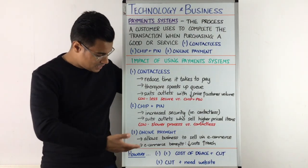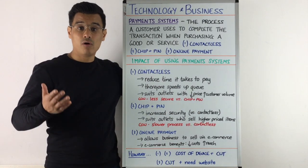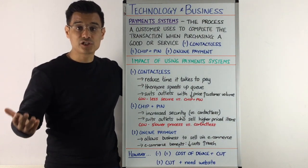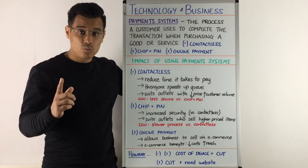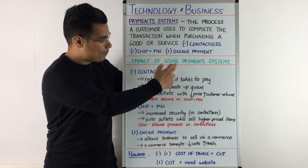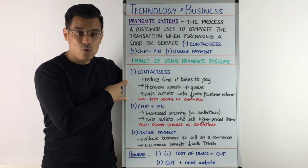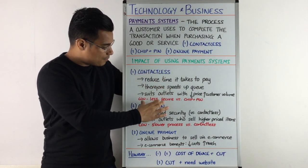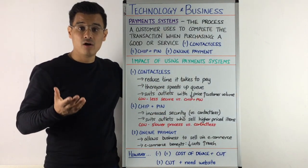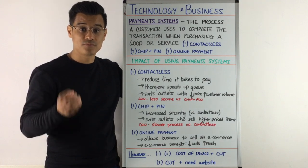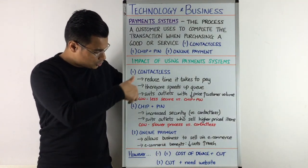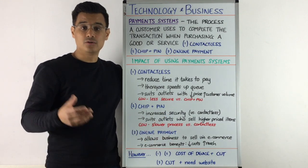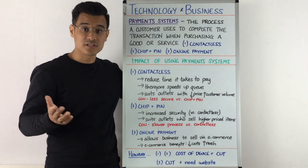Online payment is number three. Online payments allow you as a business to sell on the internet through e-commerce, and you get the benefits of e-commerce such as higher reach and possibly lower costs. One thing to consider: contactless and chip and pin are used in a physical outlet offline, and the machine needed for both will cost money — the provider also takes a cut of your sales, so higher costs. Similarly, providers of online payment services that you plug into your website will also take a cut, so again, higher costs.